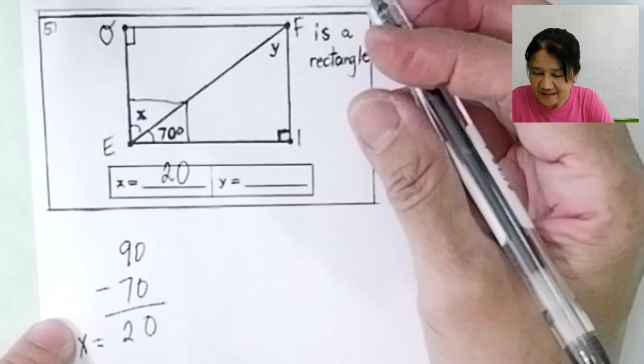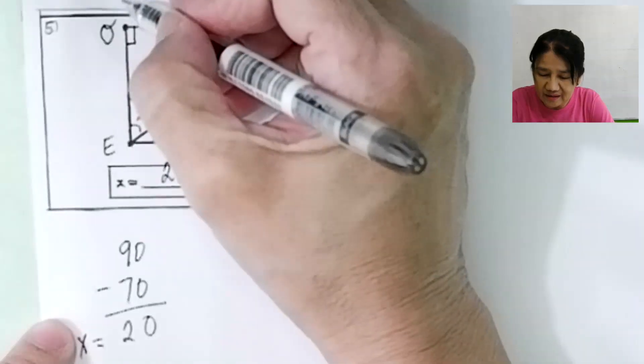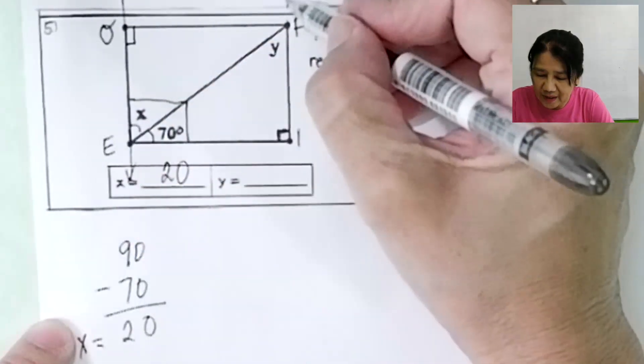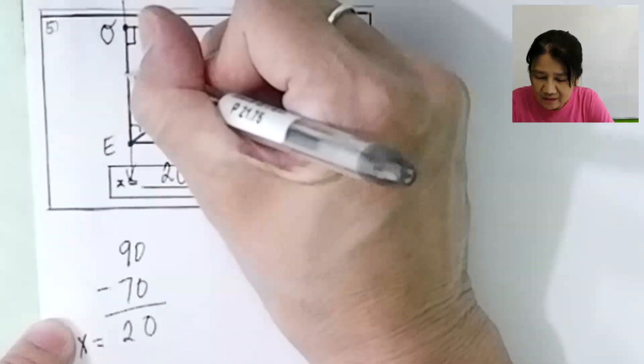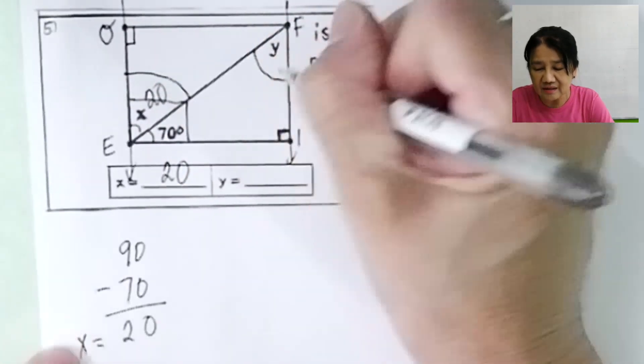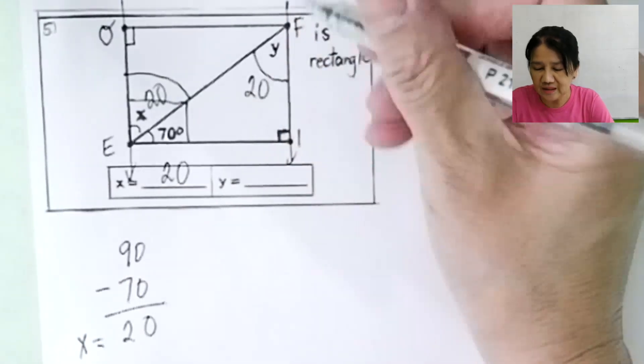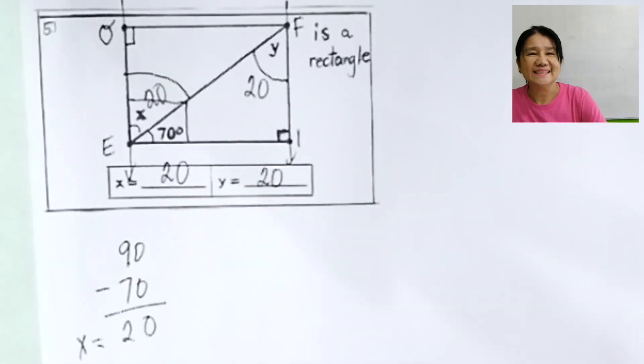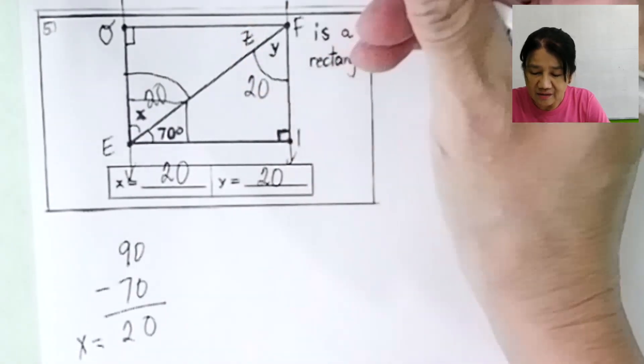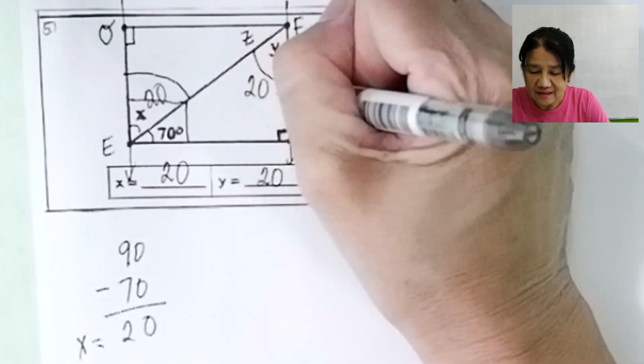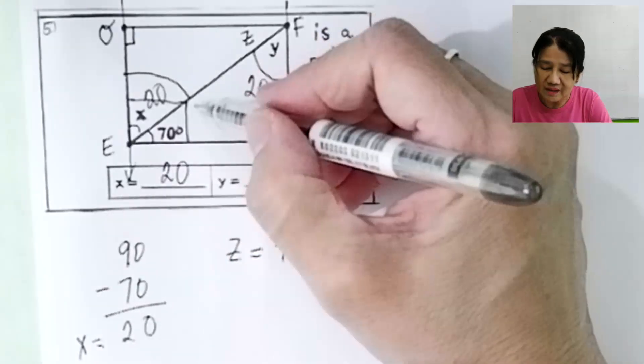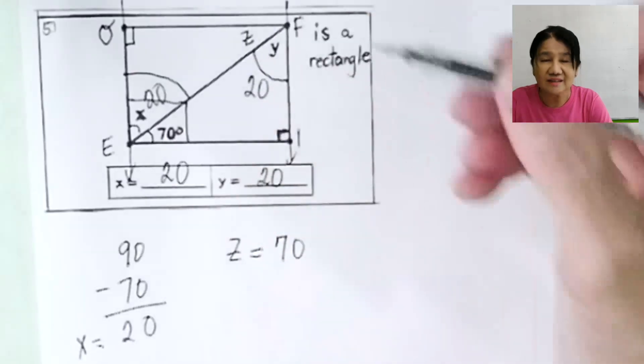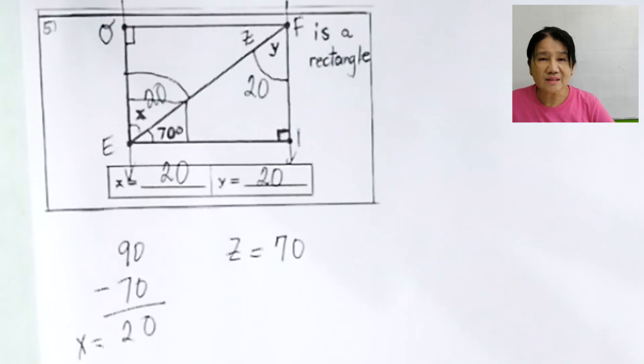What about y? So in a rectangle, this is also parallel to this. This is your transversal. So if x here is 20, these are alternate interior angles. So y is also 20. Now what if they ask for another angle z here? Obviously, the sum here is 90. 90 minus 20 will give you z, which is equal to 70. Then to check, the alternate interior angles are congruent. So that will also give you 70 for z.